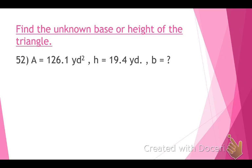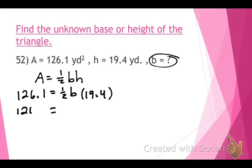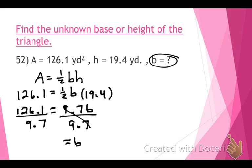Find the unknown base or height of the triangle. The formula is A equals one-half times base times height. The area is 126.1 and the height is 19.4, so: 126.1 equals one-half times B times 19.4. Multiply one-half times 19.4 to get 9.7, then bring down the base. Divide both sides by 9.7 to get B by itself. The base equals 13 yards.